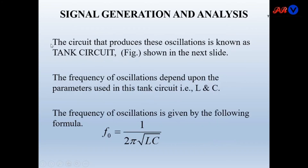The circuit that produces these oscillations is known as a tank circuit. The frequency of oscillation depends upon the parameters used in the tank circuit — L (inductance) and C (capacitance). The frequency of oscillation is given by the formula: F = 1 / (2π√LC).